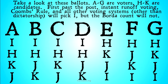Take a look at these ballots. A through G are voters, H through K are candidates. First past the post, instant runoff voting, Condorcet's rule, and in fact all other voting systems short of dictatorship will pick I, because I not only has a plurality of first-place votes — I has an outright majority. The Borda Count, on the other hand, will not.